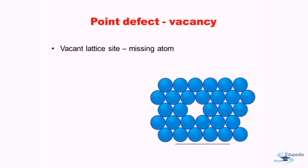Let's begin our discussion with the idea of vacancies in metals. A vacancy is basically a missing atom. In a crystalline lattice there are defined locations where atoms need to be present — that is what brings regularity and long-range ordering in a crystal. But it can happen that atoms are missing from some sites. As shown here, we have an atom missing; there should have been an atom there. This missing atom location is known as a vacancy.